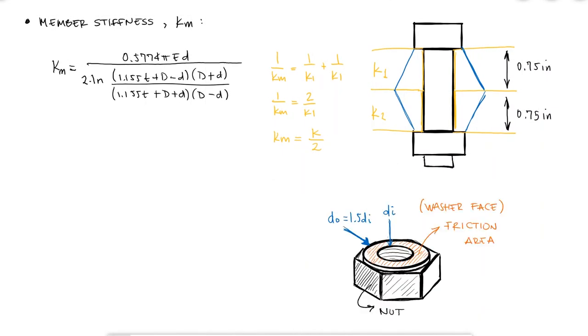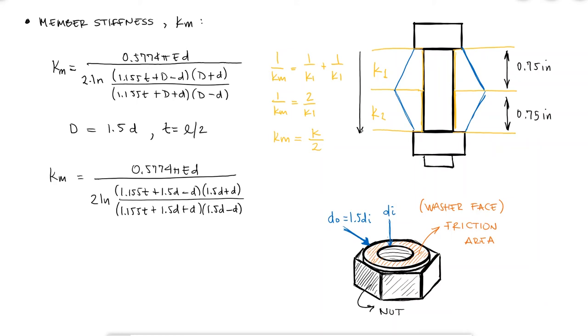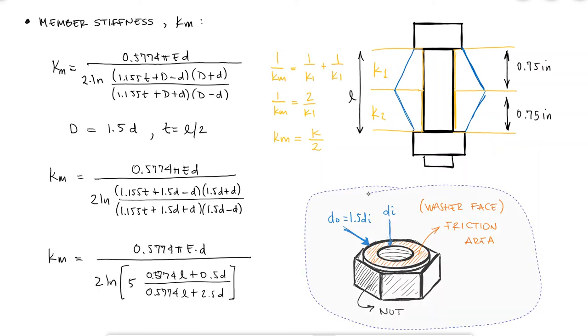From a previous video, we had established that this outer diameter is 1.5 times the nominal diameter. If we substitute this capital D value into the equation for the member stiffness, and realize that the thickness of each member is the grip over 2, we obtain a very simplified expression. With the elastic modulus of cast iron and the grip and the nominal diameter, I would find that the member stiffness is 5.21 megapounds per inch.